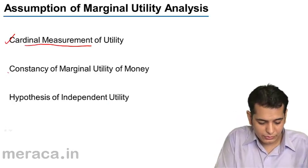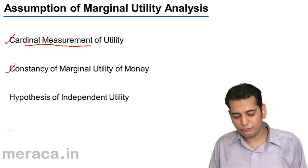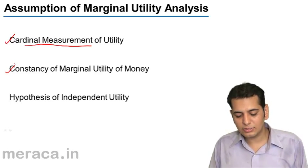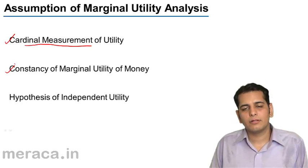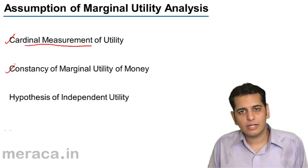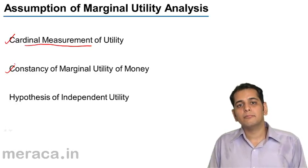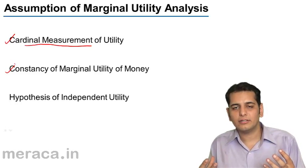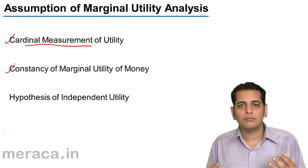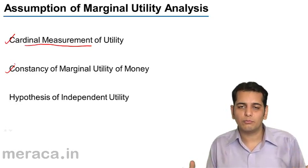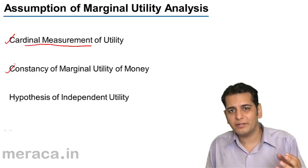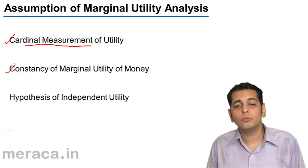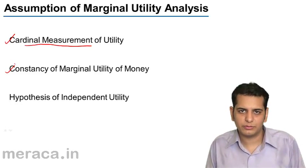The next assumption is constancy of marginal utility of money. Please understand that the more money a person has, the more money he wants. If I give you 10 rupees, you will derive some satisfaction from it.